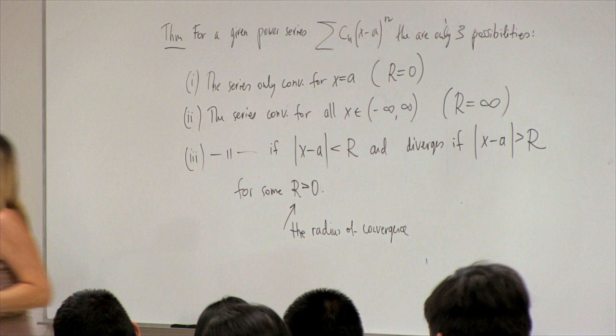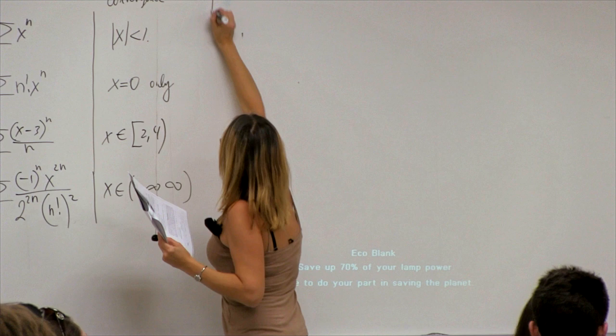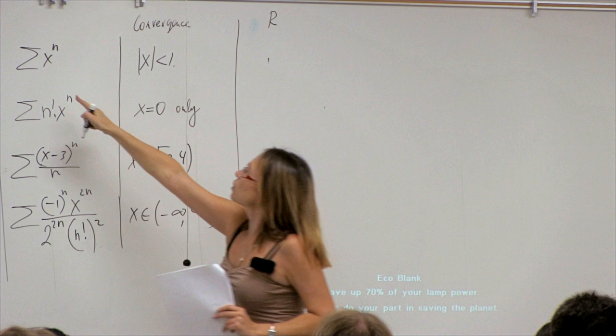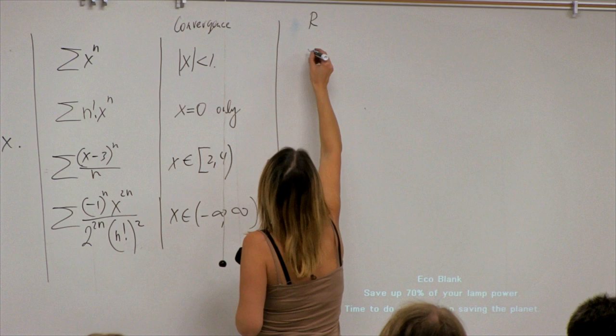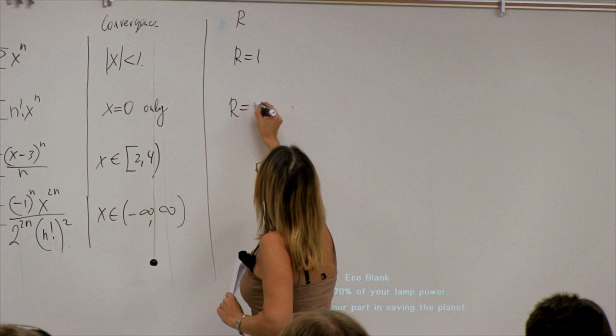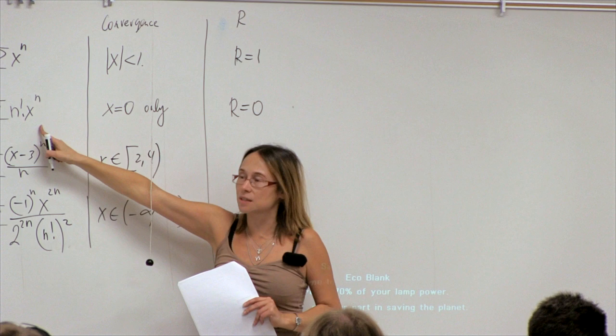Looking at our examples: for the geometric series, the radius of convergence is 1. The second example, n! x^n, has radius of convergence 0 — it only converges at the center. This power series is centered at 0, since we just have x^n rather than (x−a)^n.